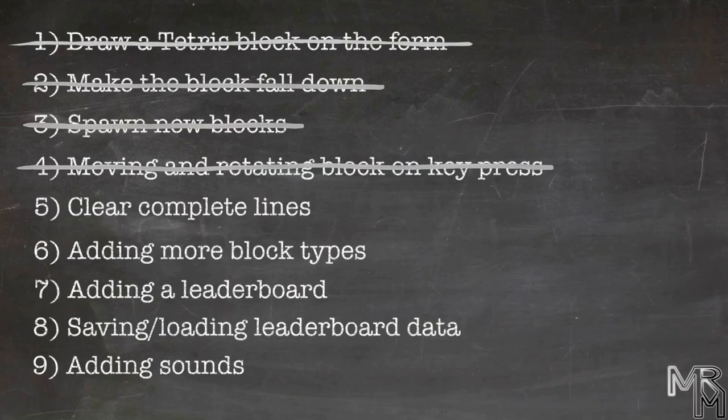Awesome — step 5 complete! In this video we added an important part of a Tetris game: line clearing. And based on that, we now have our game keep track of the score and level. As usual, please make sure it's clear to you how the code we added works, otherwise it might get difficult to follow the content of the subsequent videos. In the next video, we'll add other block types so that our Tetris game gets more Tetris-like, with blocks other than the L-shaped one. See you then. Bye.